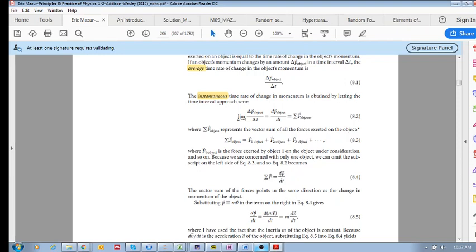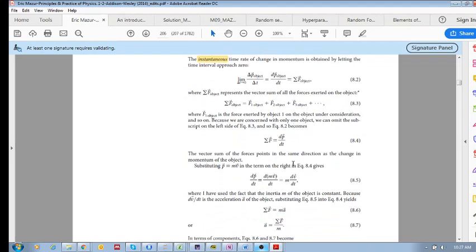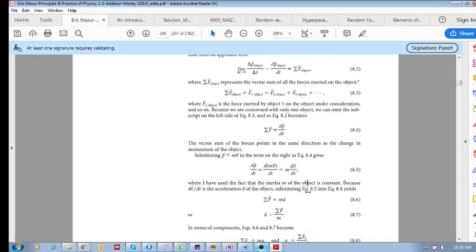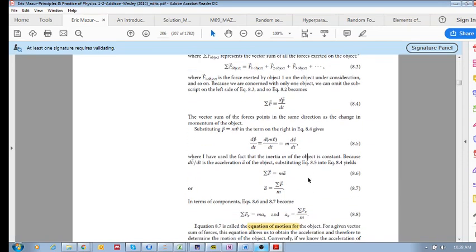Now what is p? It is momentum, and it is equal to mv. If we substitute mv into p, we're going to have d/dt of mv. We know that the inertia is constant, so there's no change in the inertia. We can take that out, so we've got m dv/dt, and what is dv/dt? We know that it is acceleration.